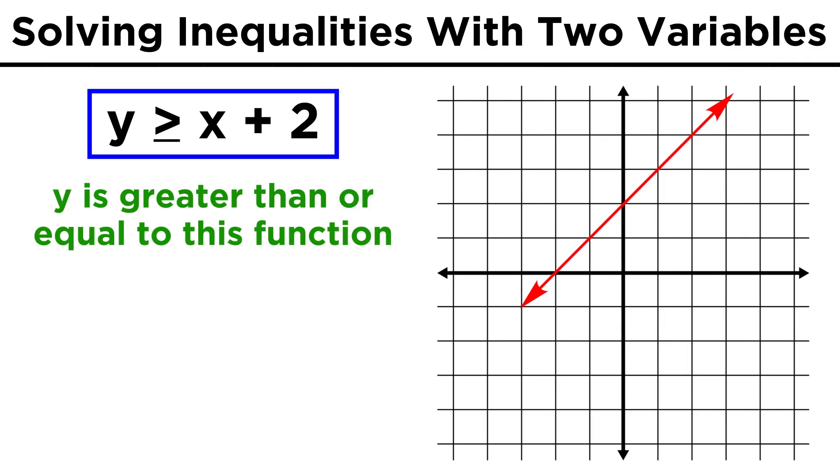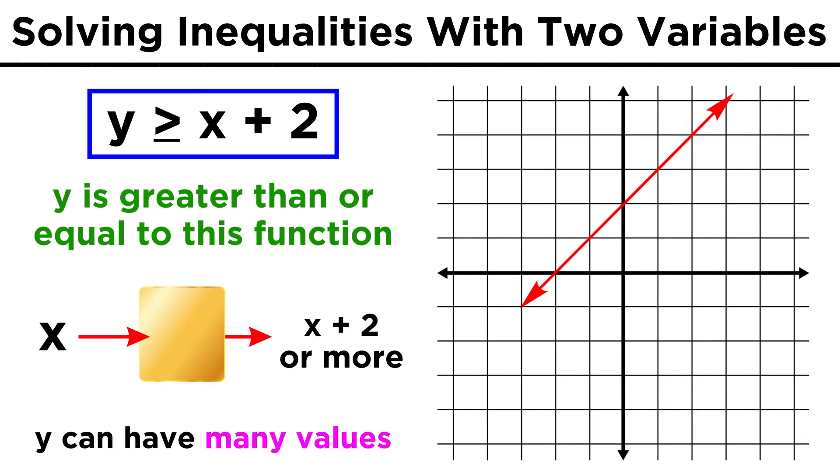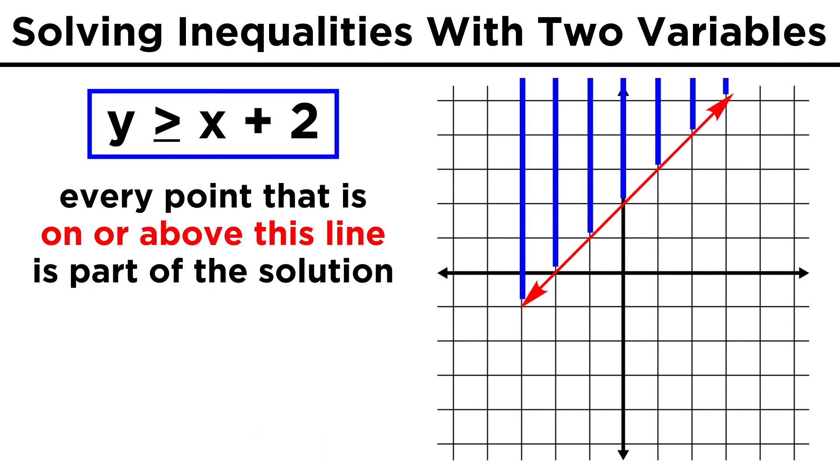Now what the inequality says is that y must be greater than or equal to this. So for any input x, y must be greater by two or more. So when x is zero, y must be two or more. When x is one, y must be three or more. That means that every point on this line is a solution to the inequality, as is every point in the x, y plane that is above this line, since every point above the line has a y value that is greater than the corresponding y value of the line.